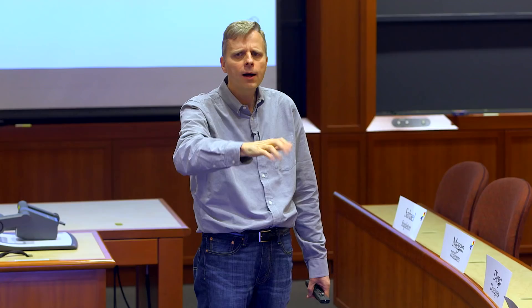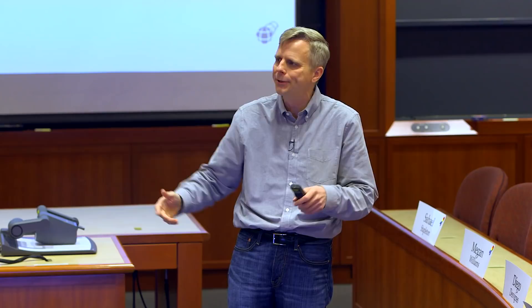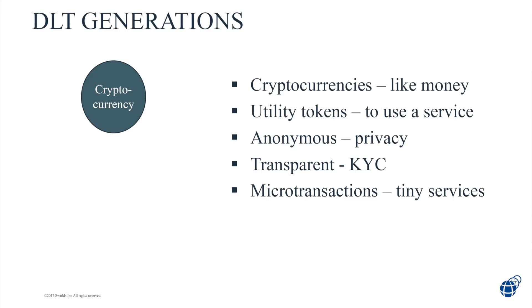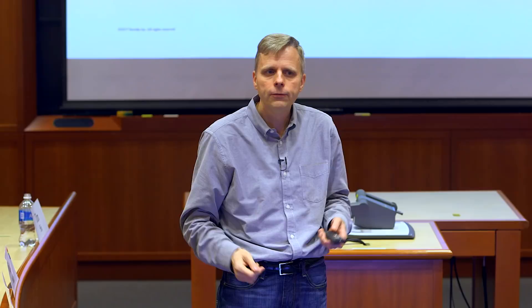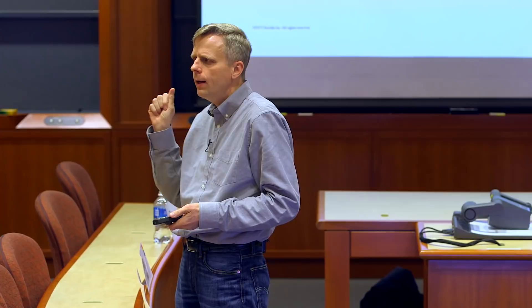Bitcoin lets us use cryptocurrencies like money — save it in a wallet as a store of value, transfer money to others like PayPal, or use utility tokens to pay for services. Economists debate whether it's money, equity, stock, or a utility token — the answer is it's sort of all of those mushed together. We're also seeing features like strong anonymity, strong transparency for know-your-customer requirements, and microtransactions — potentially paying a thousandth of a cent for things like reading papers behind a paywall.